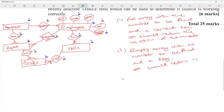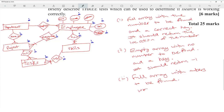Test three: send a full array with the number to be found but the wrong key — it should return minus one.